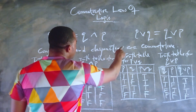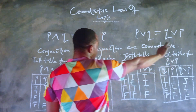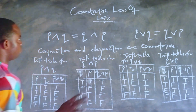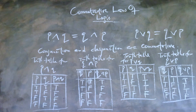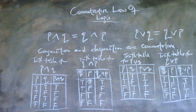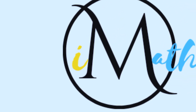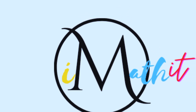Conjunction and disjunction are commutative, just like addition and multiplication in algebra are commutative. This is one of the algebraic laws of logic. You can look into the other algebraic laws of logic on this channel. Please remember to hit the like button and subscribe for more educational content like this. Until next time, keep at it and keep winning. Bye.